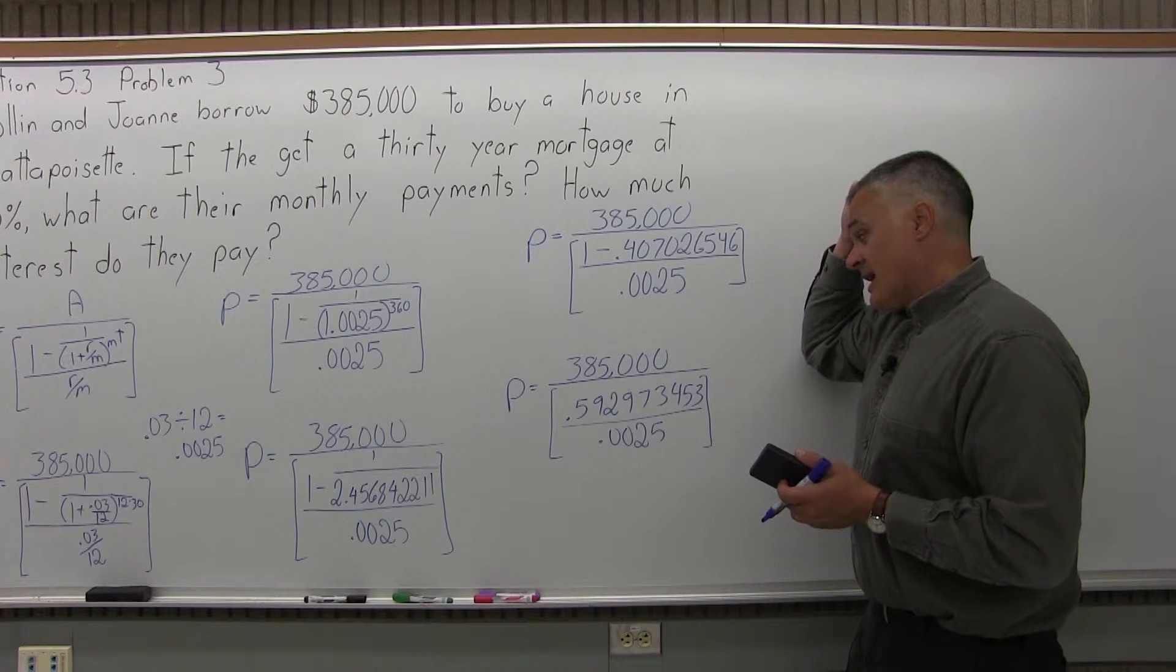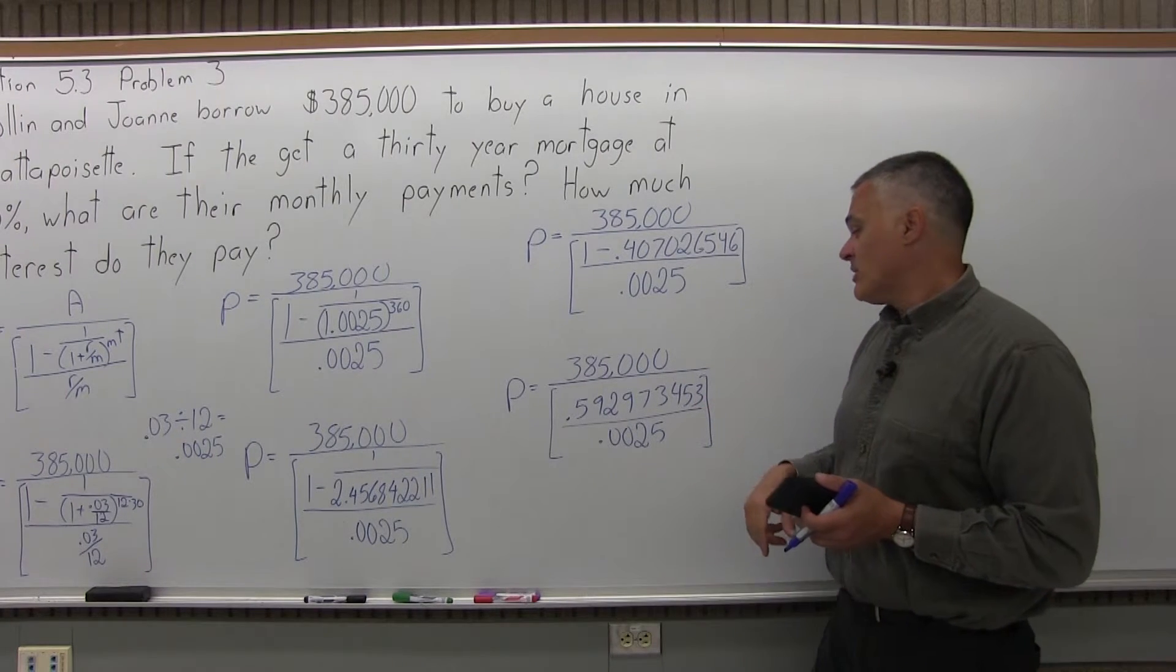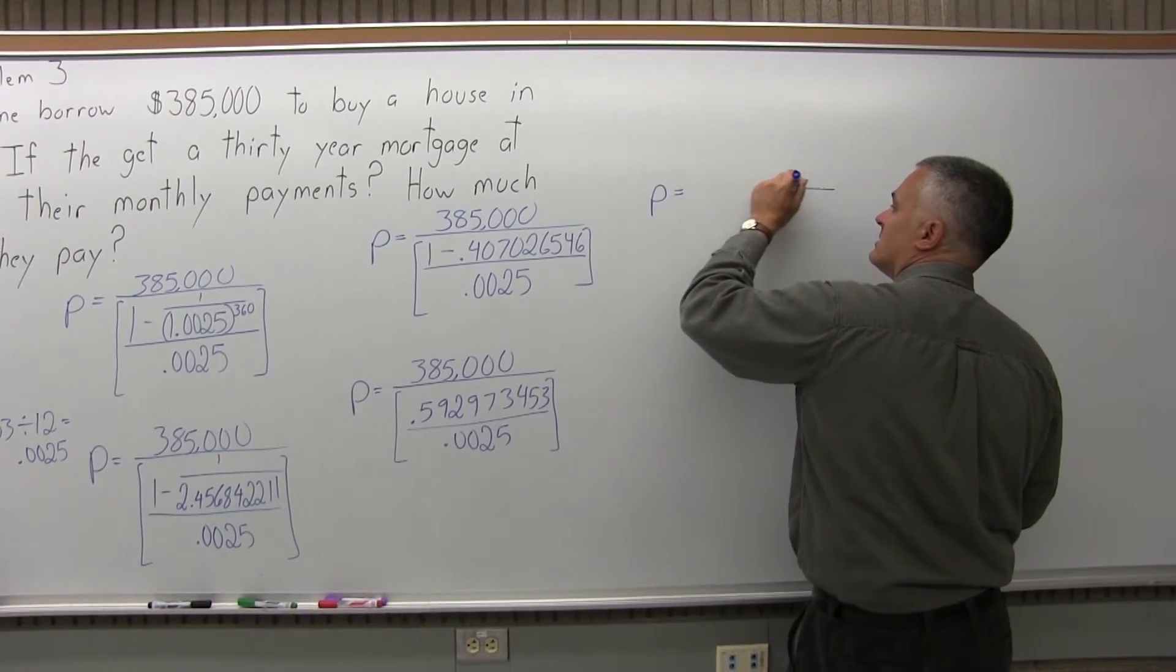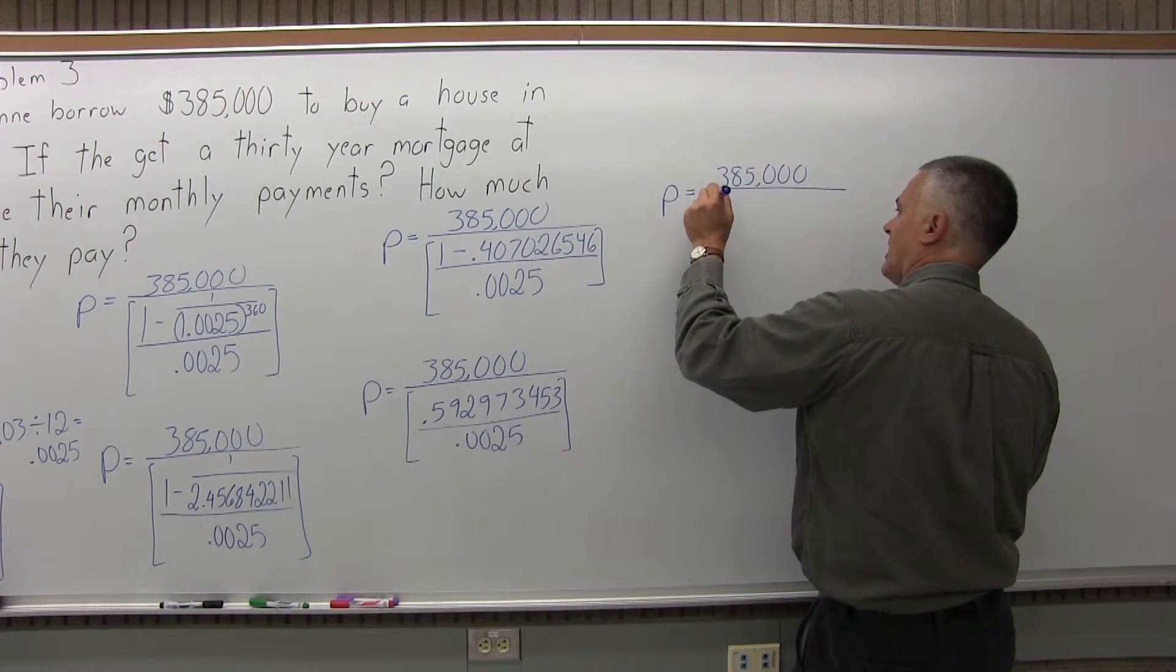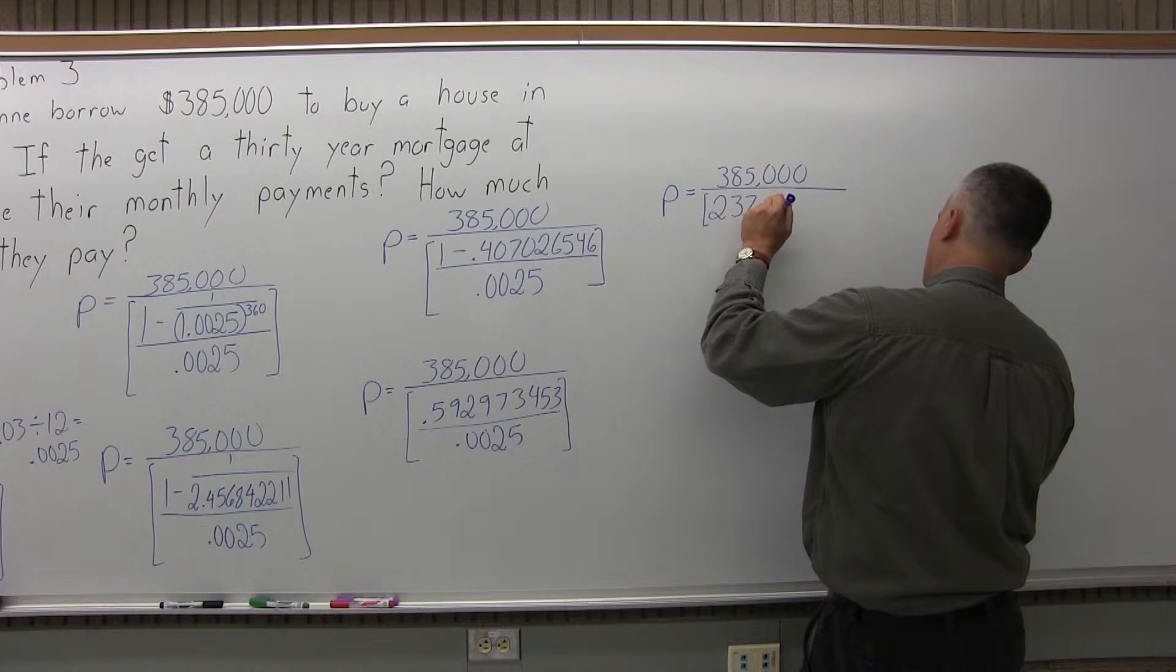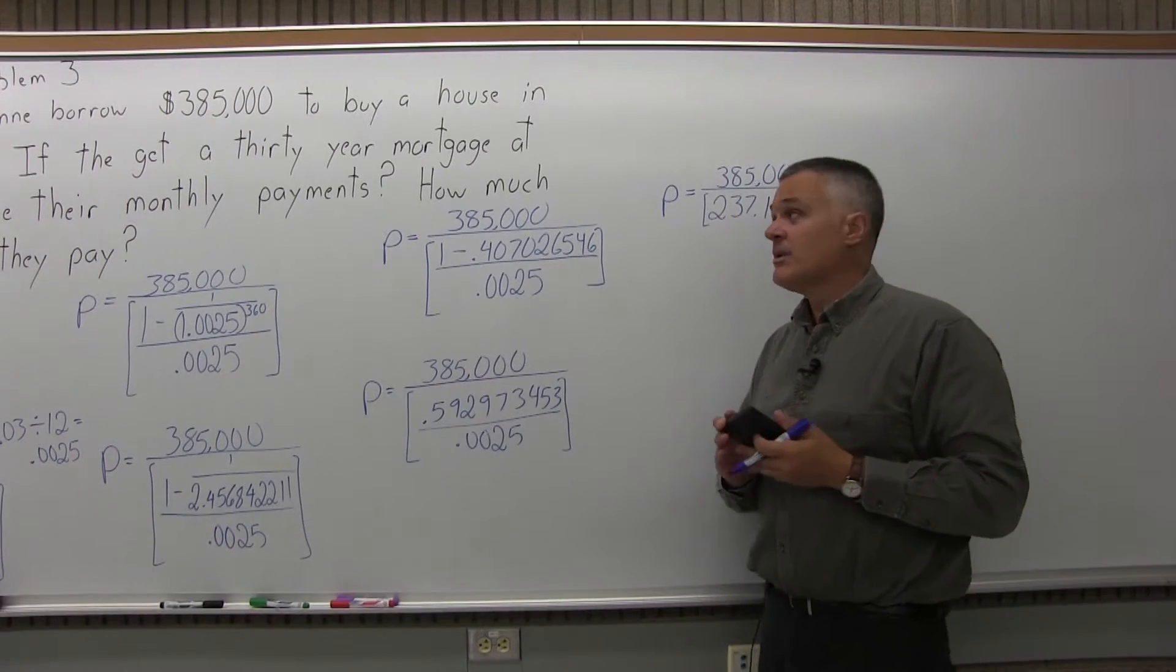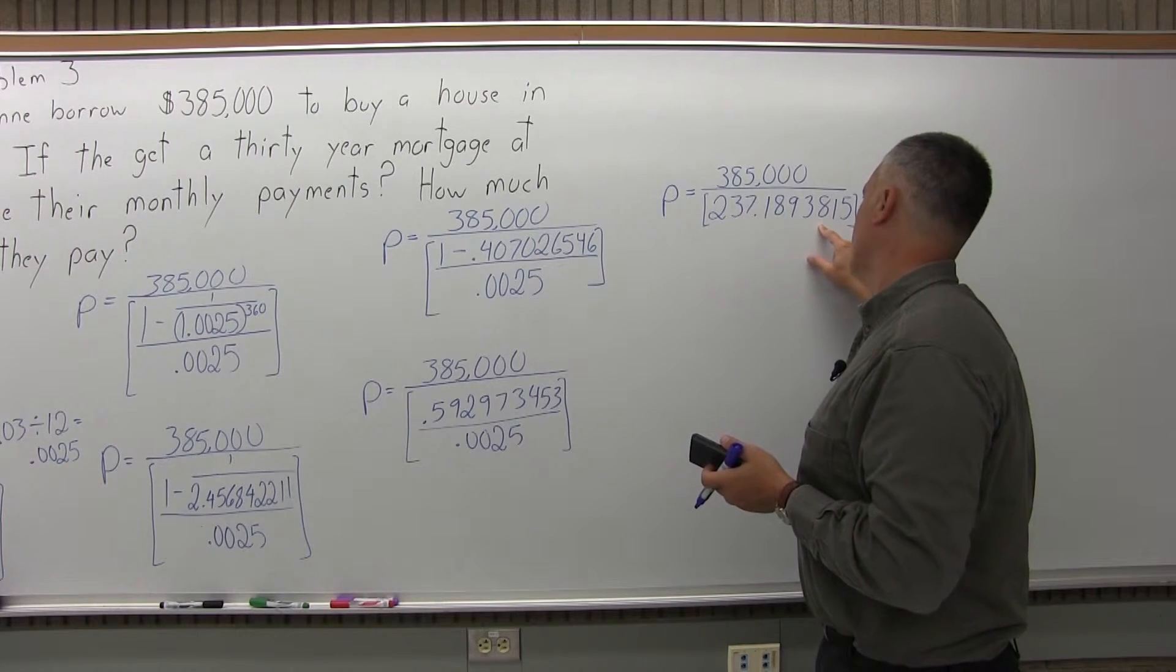So to finish off my work in brackets, I have to do the division, .592973453 divided by .0025, which will give me P equals 385,000 divided by the brackets with just one value in it now, 237.1893815. So the last thing I have to do to get my monthly payment is divide 385,000 divided by 237.1893815.